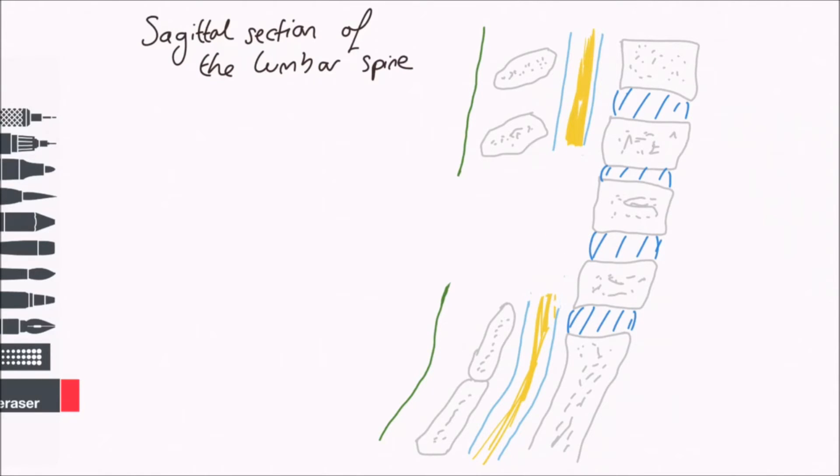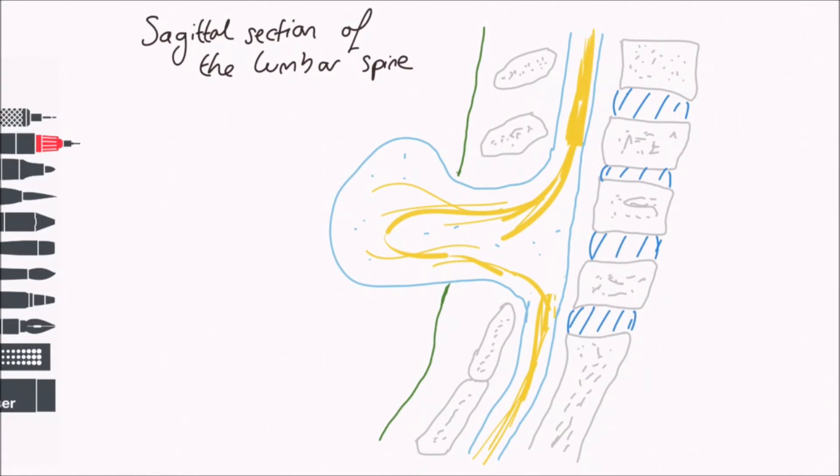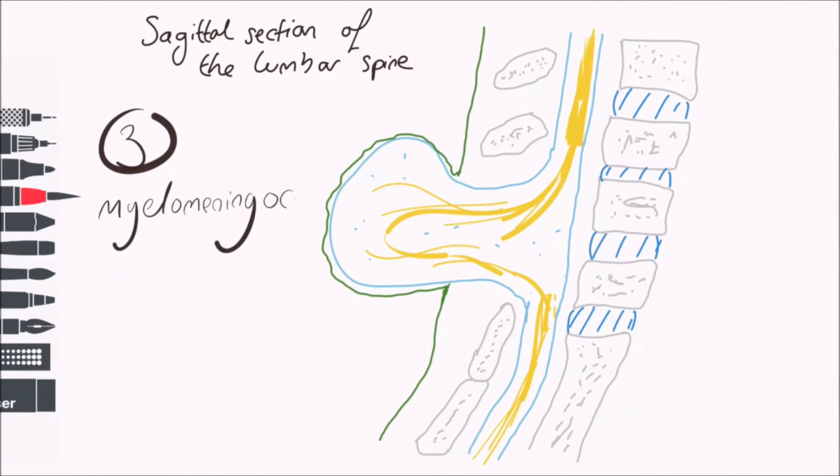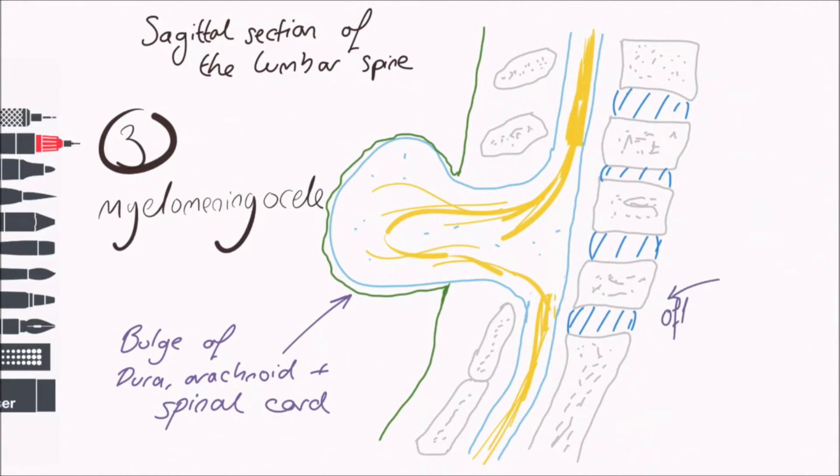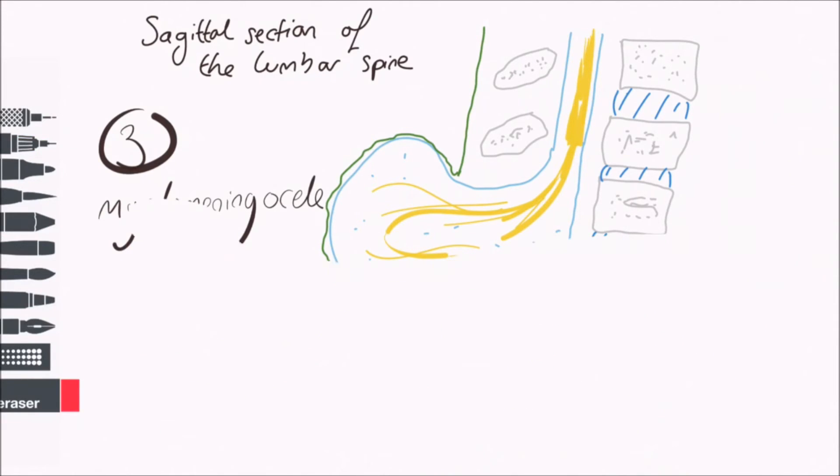The third and most serious form of spina bifida is the myelomeningocele. This also involves the formation of a bulge of meninges and CSF. However, on top of this, the protruding sac also contains nerves and parts of the spinal cord. Incomplete development or significant neurological damage usually occurs in this form, resulting in weakness, paralysis, and loss of sensation below the affected region. Problems with involuntary functions, such as bladder control, lead to a significantly impaired quality of life.